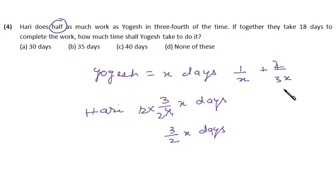This is per day work done by both of them and per day work is actually 1 by 18. Since together they are taking 18 days to complete the work, that means per day they are doing one upon 18 work. Now let's calculate the value of X over here. So X is 30 days.